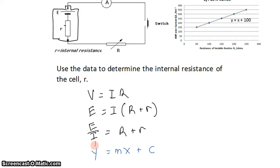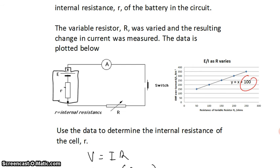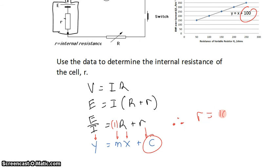Y is E on I, x is R, M is 1, the slope should be 1, and R, the internal resistance, should be the y-intercept. So this allows me to say, therefore, R is equal to the y-intercept of the graph, which is 100. 100 ohms.